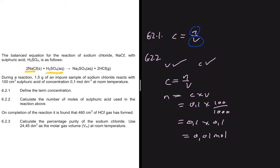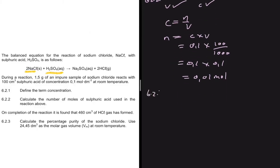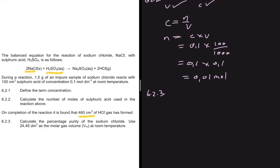Moving to 6.2.3 — on completion of the reaction it is found that 460 cm³ of HCl gas has formed. The question asks us to calculate the percentage purity of the sodium chloride used, given that the molar gas volume at room temperature is 24.45 dm³.